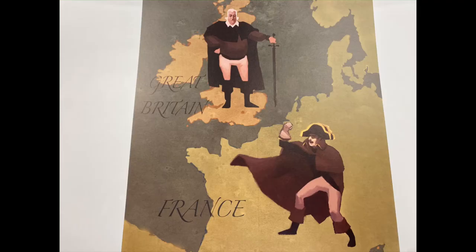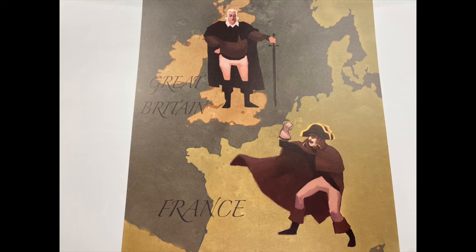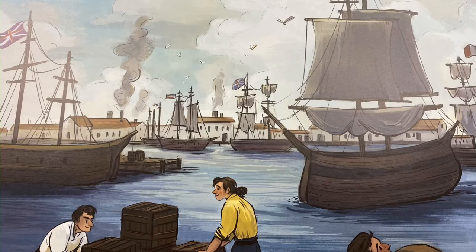Meanwhile, across the Atlantic, France and Britain went to war against each other. This series of wars became known as the Napoleonic Wars, named after the French leader Napoleon Bonaparte, who wanted to make France the most powerful nation in the world. Britain was determined to stop him. The United States considered both France and Great Britain to be its friends and did not want to get involved. Even though the Napoleonic Wars were being fought across the Atlantic Ocean, they greatly affected the United States, as much of its growth depended upon trade with France and Great Britain.